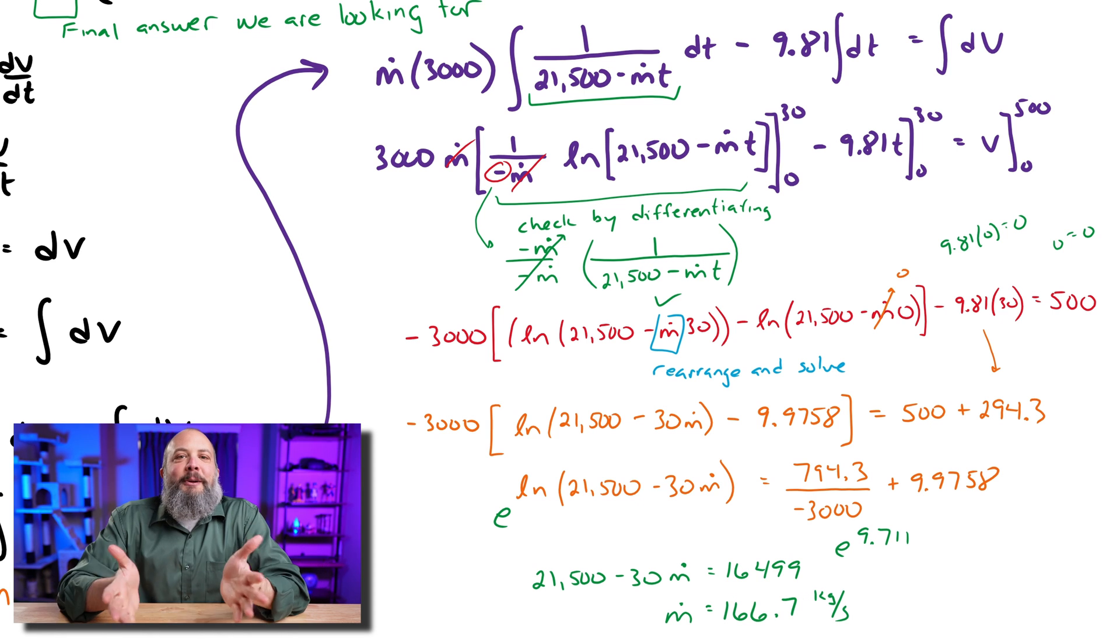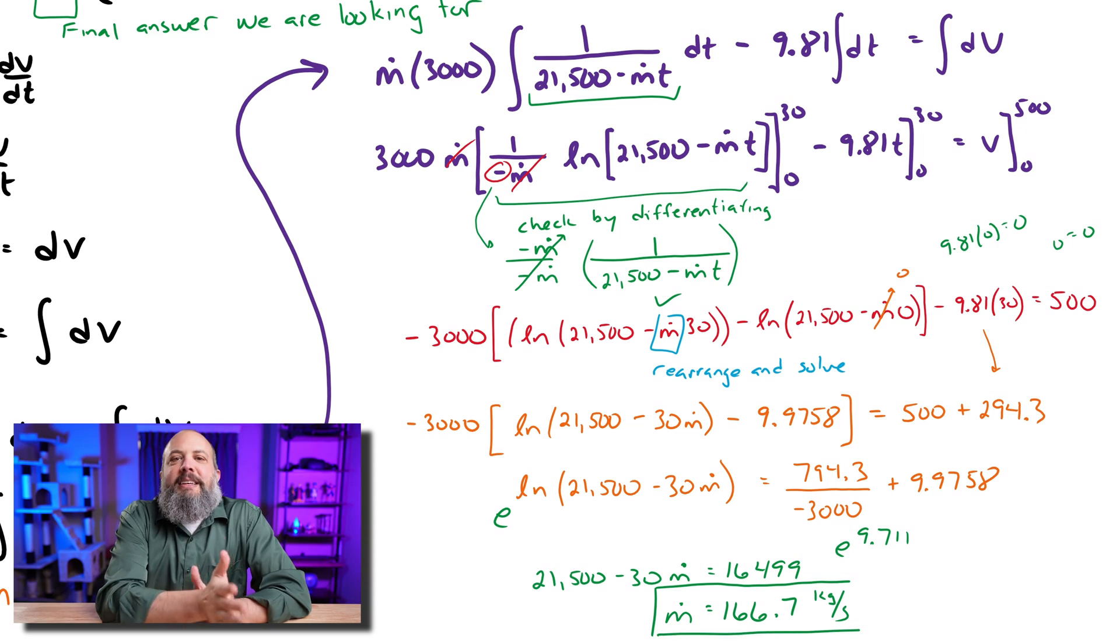Subtract, divide. We get a mass flow rate of 166.7 kilograms per second.